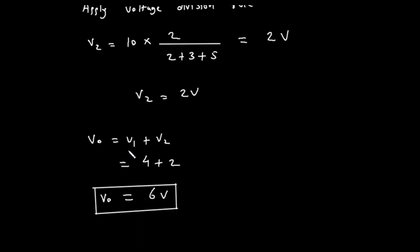Step 3: Calculating the final voltage V0. Now we have the two component voltages. V1, the voltage from the current source, is 4 volts. V2, the voltage from the voltage source, is 2 volts. According to the superposition theorem, the total voltage V0 is the sum of these individual voltages. So V0 equals V1 plus V2. V0 equals 4 volts plus 2 volts. Therefore, the final voltage V0 is 6 volts.